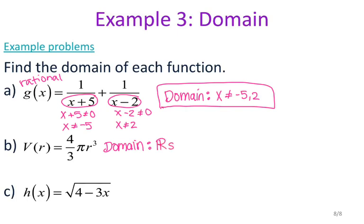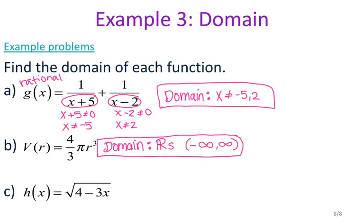All real numbers can be written with the real number symbol ℝ, or in interval notation that is negative infinity to positive infinity. For the last one, h of x equals the square root of 4 minus 3x — this one has an issue because it is a radical. With radicals you can only take the square root of positive numbers, so 4 minus 3x must be greater than or equal to zero. I can include equal to zero because the square root of zero is zero, which is allowed.